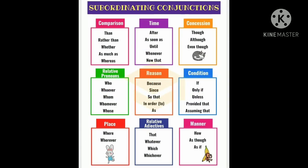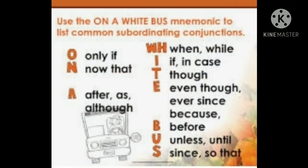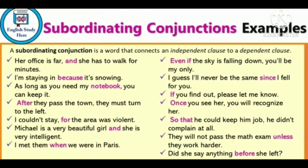The other examples of subordinating conjunctions are given here — you can read them. They are all based on comparison, time, concession, relative pronouns, reason, condition, place, relative adjectives, and manner. The acronym used for subordinating conjunctions is given on a white bus, and each alphabet relates to a conjunction. Example: her office is far and she has to walk for minutes. As we can see, one sentence is depending on the other. You can read the other examples in the same way.